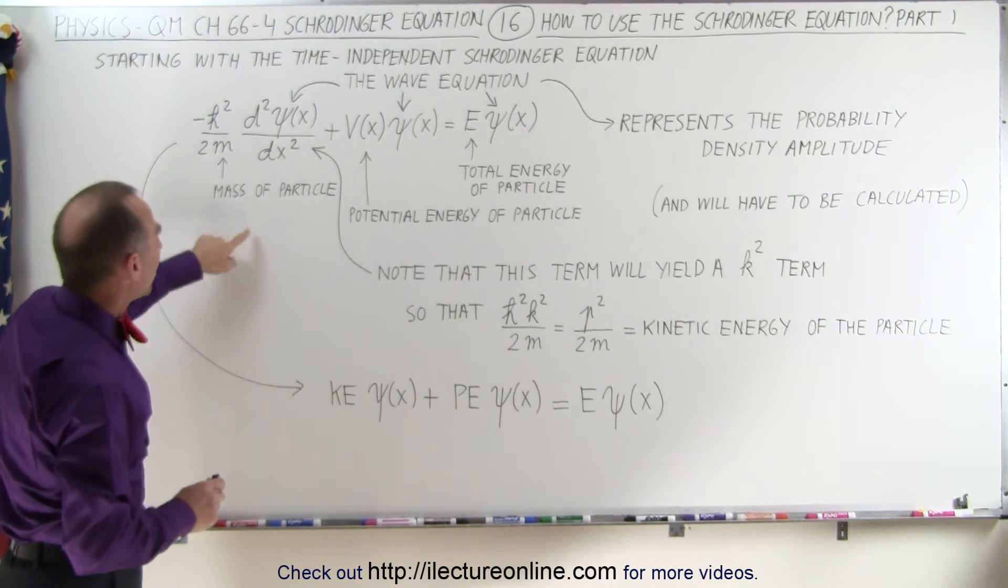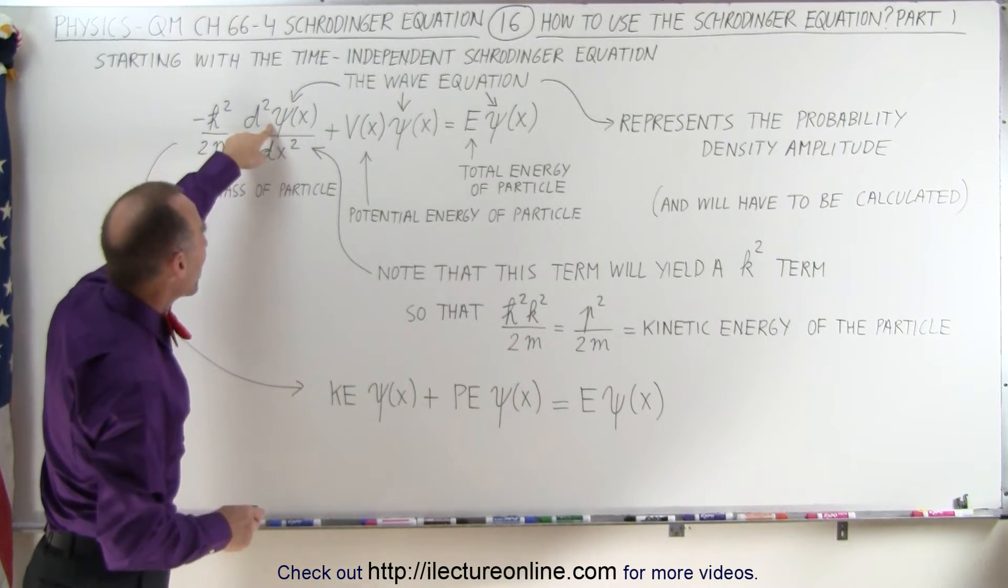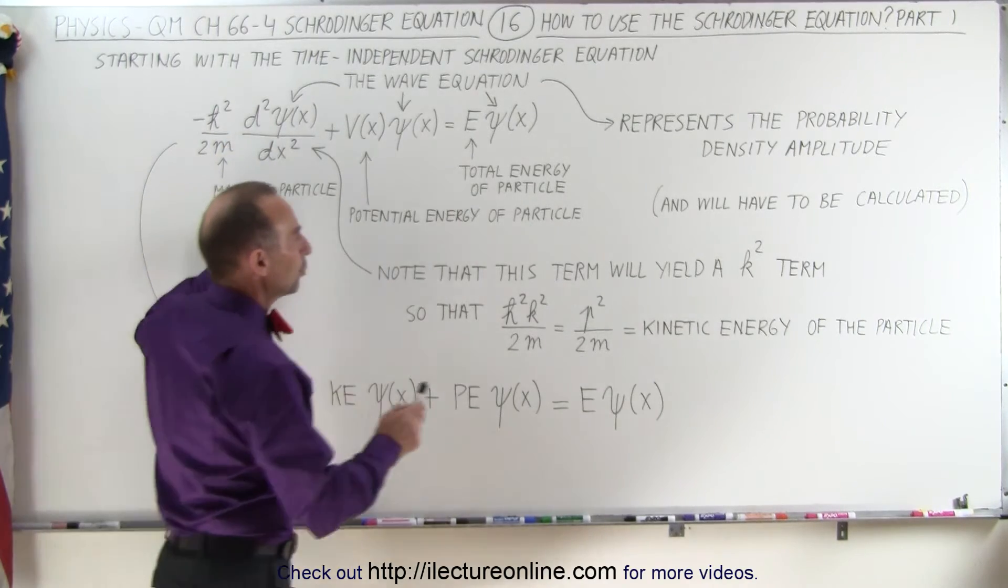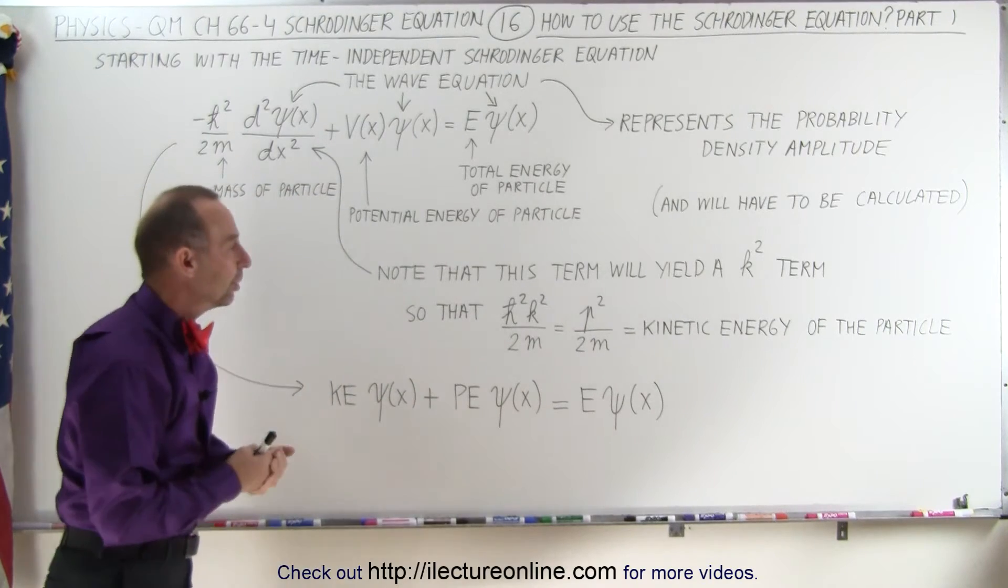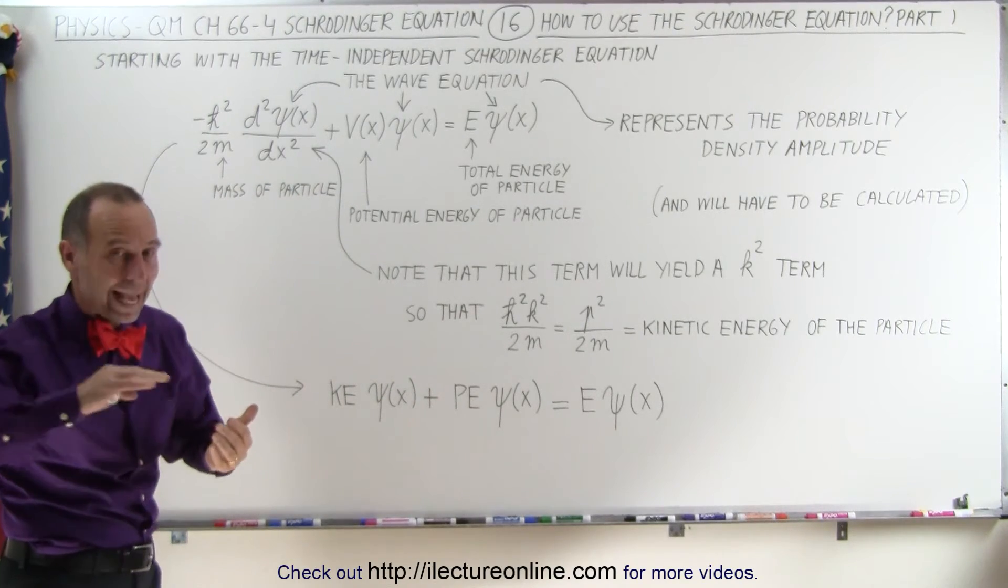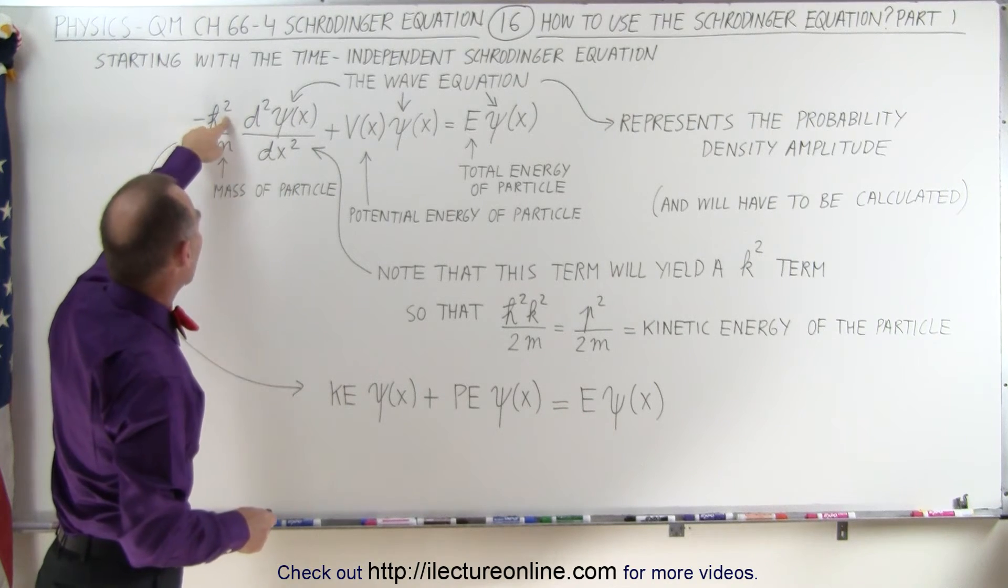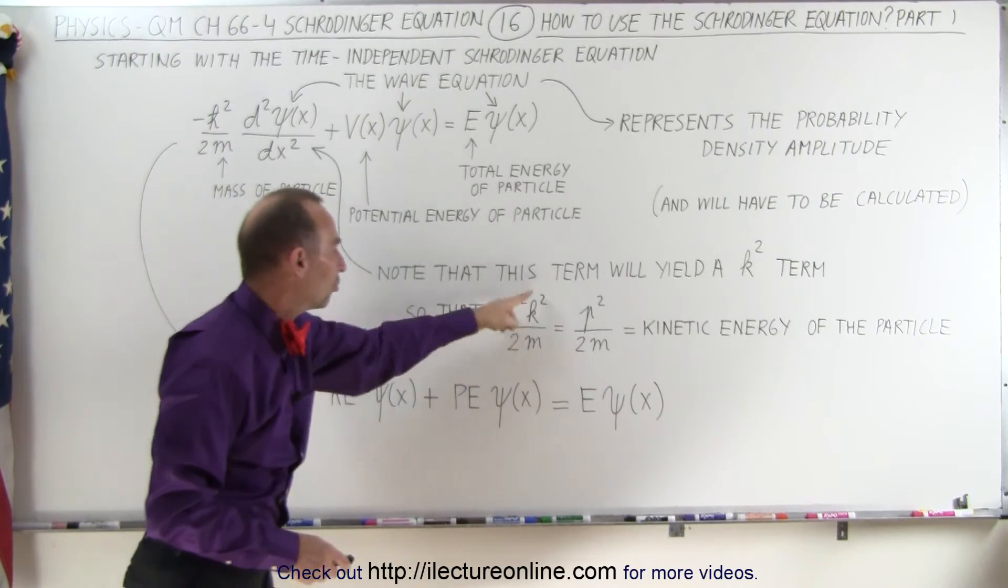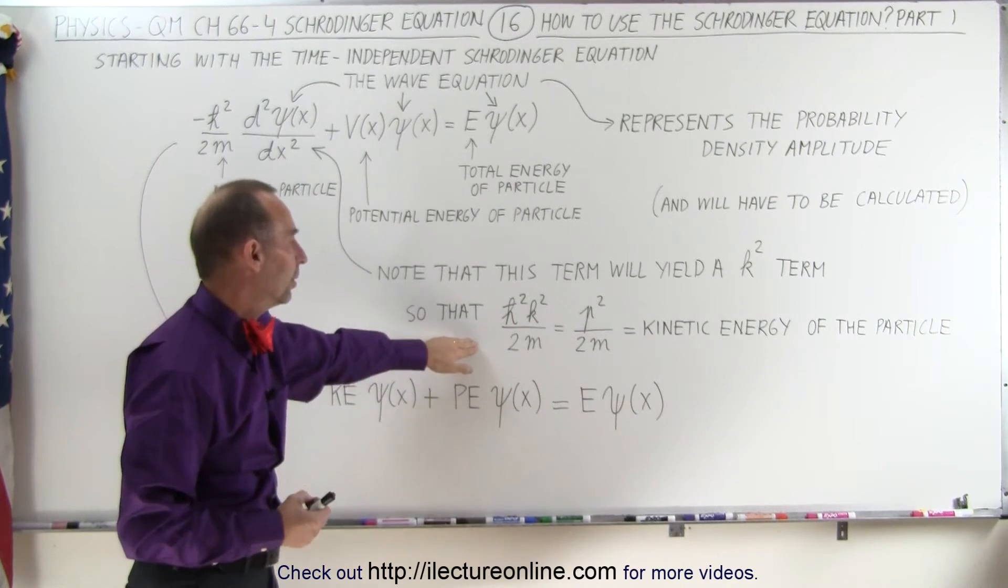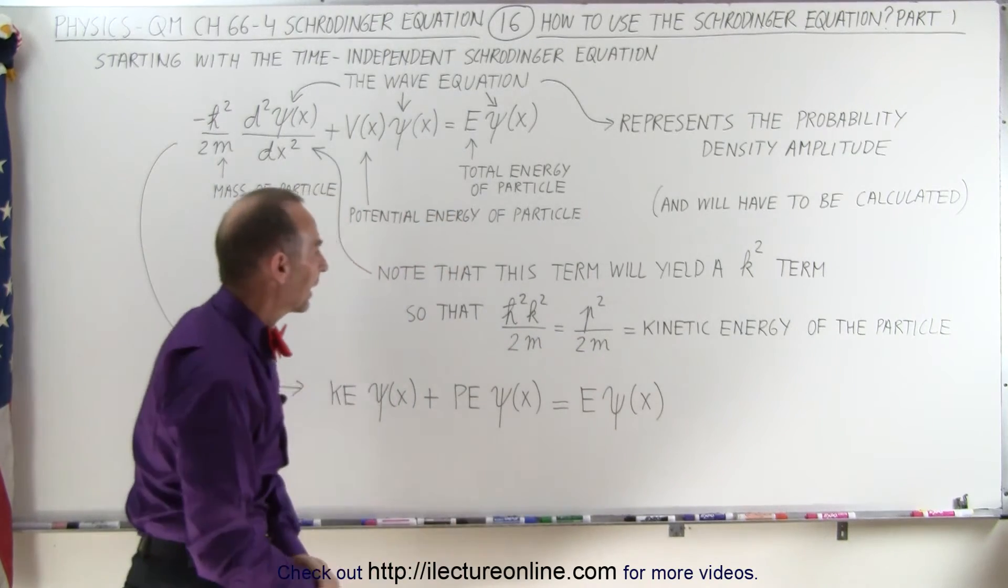But you have to realize when we take the second derivative with respect to position of the wave equation, that will yield the term k squared. Now remember that k is the wave number of the particle—the particle will act like a wave. And if we then multiply the h bar squared divided by 2m by k squared, we'll end up with this term, which is the kinetic energy of the particle, which is equal to p squared over 2m, or in other words, the kinetic energy.